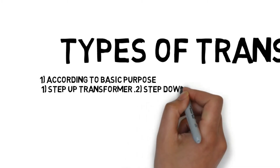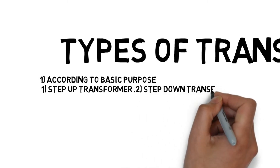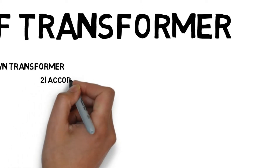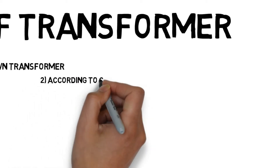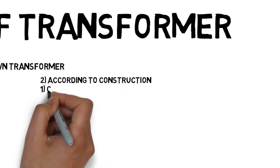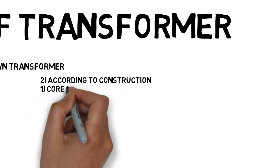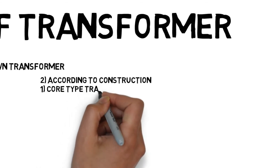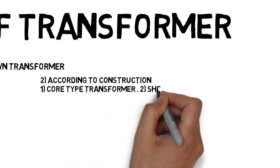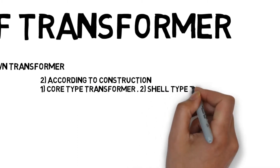As you all know, step-up transformers raise the voltage level and step-down transformers lower it. The second category is according to construction. According to construction, we have two types: the first one is core type transformer and the second one is shell type transformer.